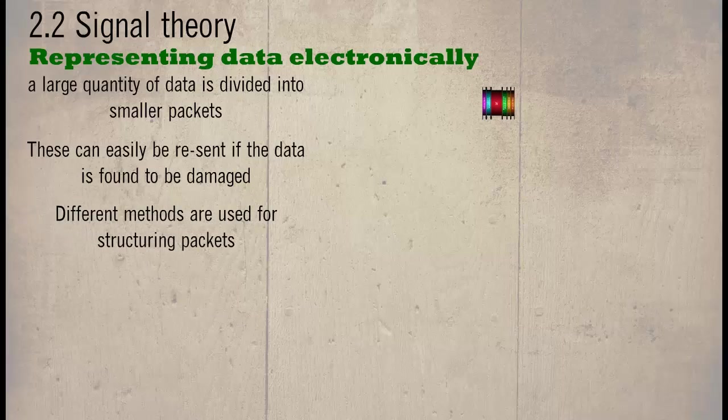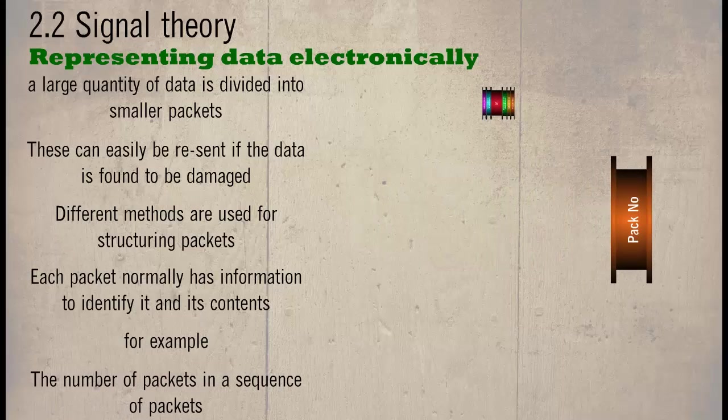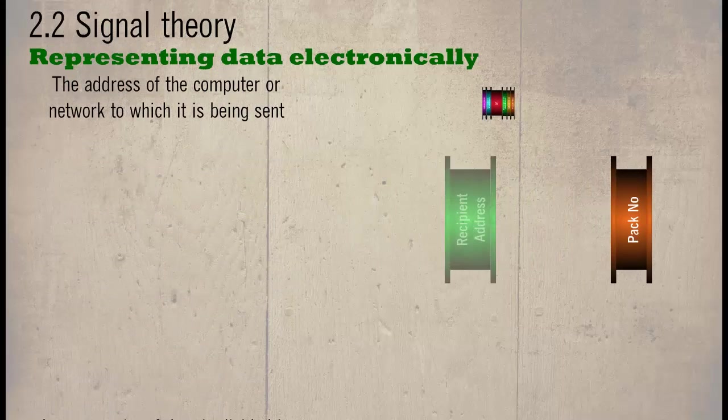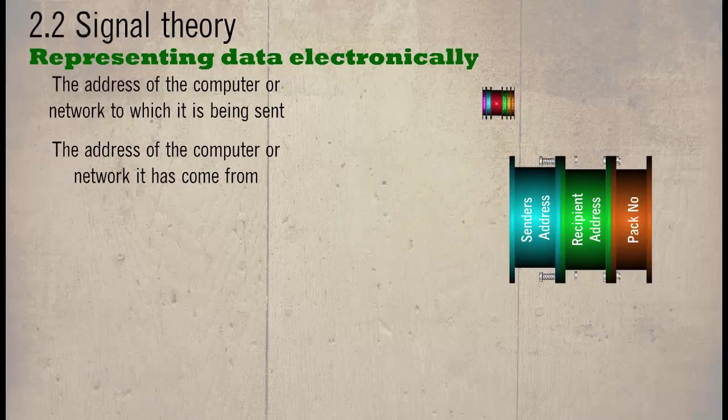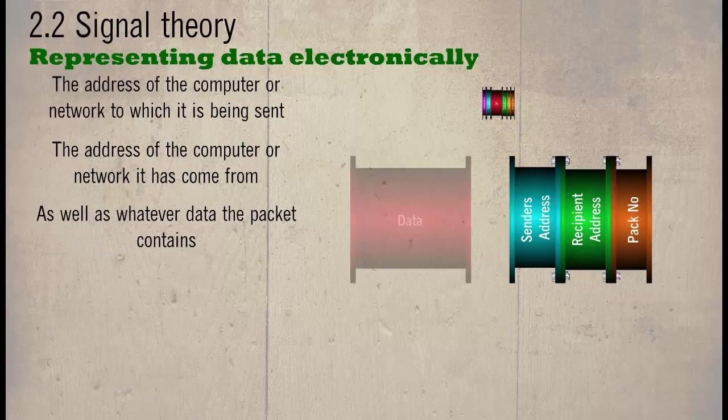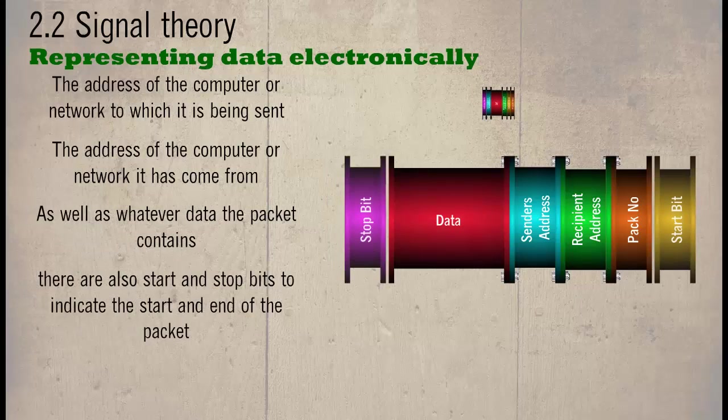Different methods are used for structuring packets. Each packet normally has information to identify it and its contents. For example, the number of packets and a sequence of packets, the address of the computer or network to which it is being sent, the computer or network it has come from. As well as whatever data the packet contains, there are also start and stop bits to indicate the start and the end of the packet.